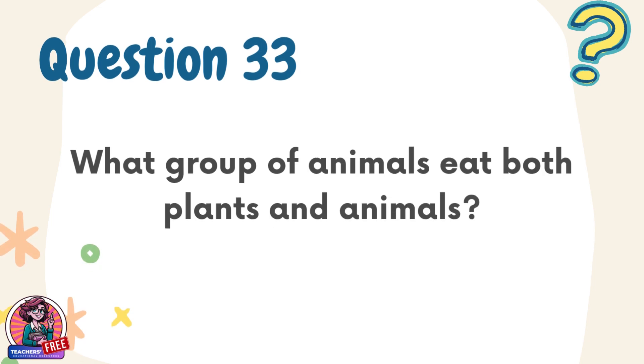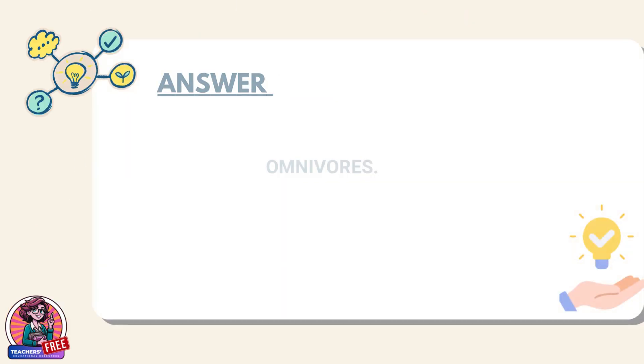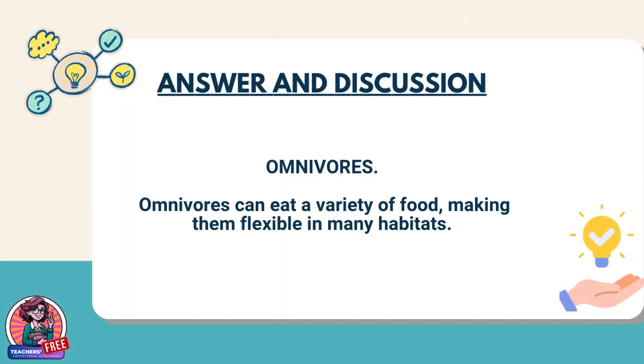Question 33. What group of animals eat both plants and animals? Answer: Omnivores. Omnivores can eat a variety of food, making them flexible in many habitats.